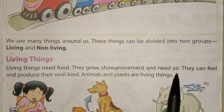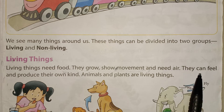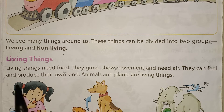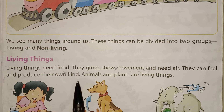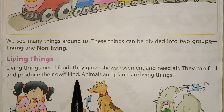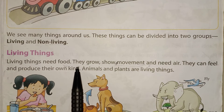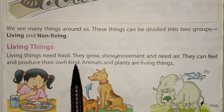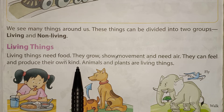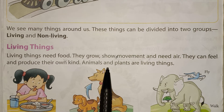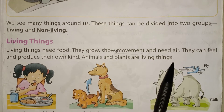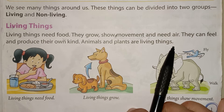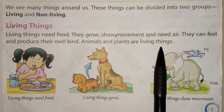Living things can feel, and they produce their own kind. A dog can give birth to a puppy; a cat can give birth to a little kitten. Animals, plants, all birds, and human beings are all living things.